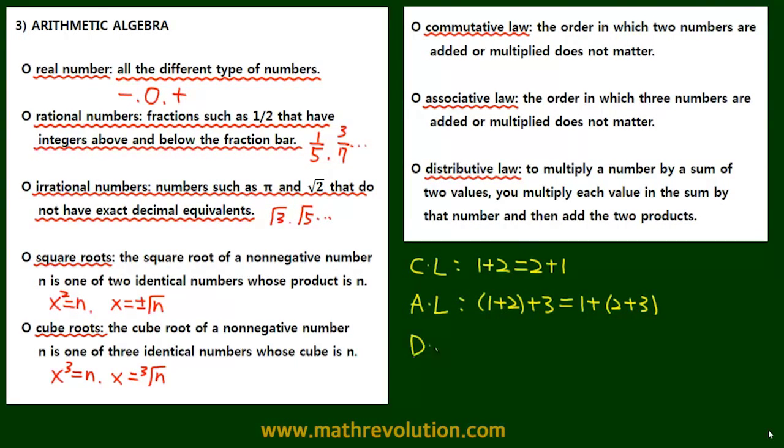Now finally, the distributive law. To multiply a number by a sum of two values, you multiply each value in the sum by that number and then add the two products. So this equation becomes 2 times 3 plus 2 times 4. This is the distributive law.